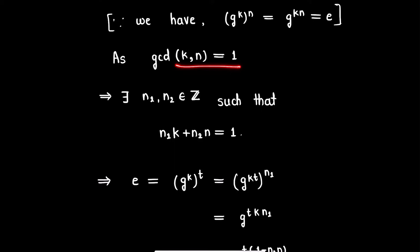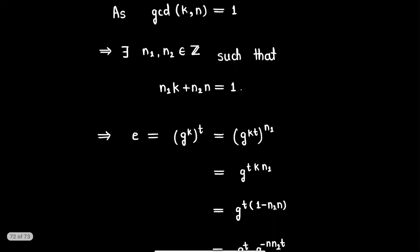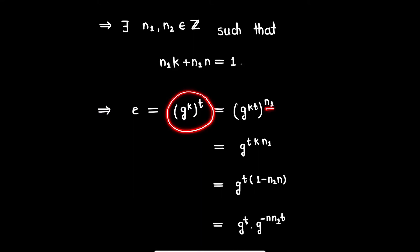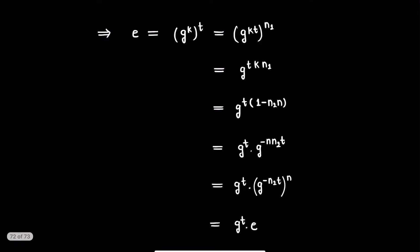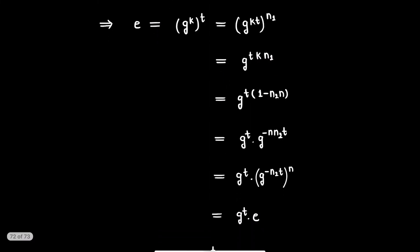As gcd(k, n) = 1, by concepts from number theory there exist integers n1 and n2 such that n1·k + n2·n = 1. Now, (g^k)^t equals the identity since the order of g^k is t. If we raise this identity to the power n1, it remains the identity, which can be written as g^(t·k·n1). We can replace k·n1 with (1 - n2·n).